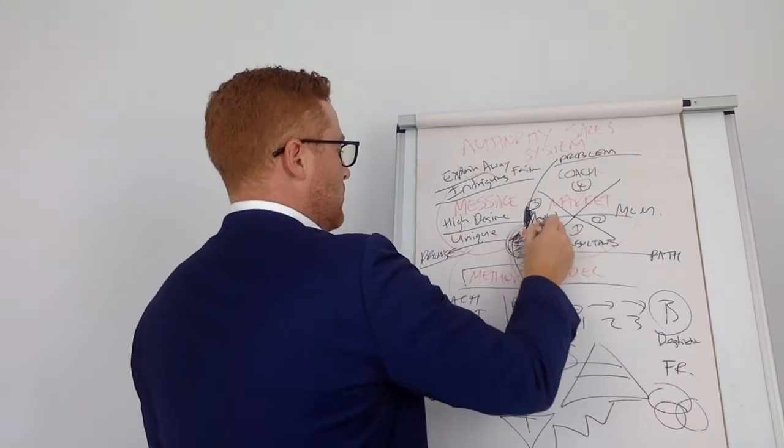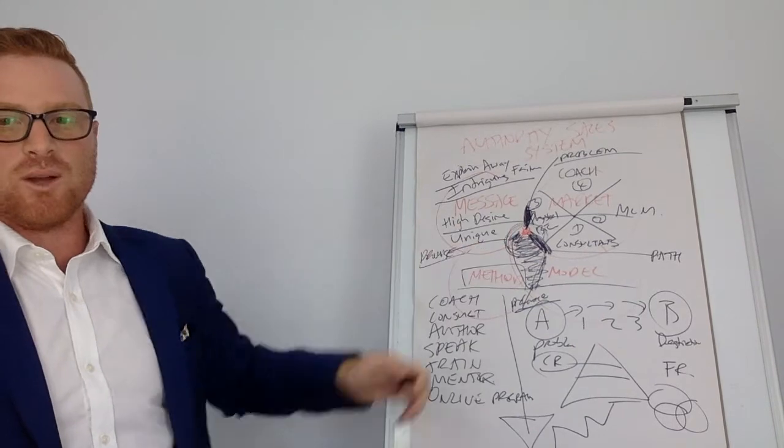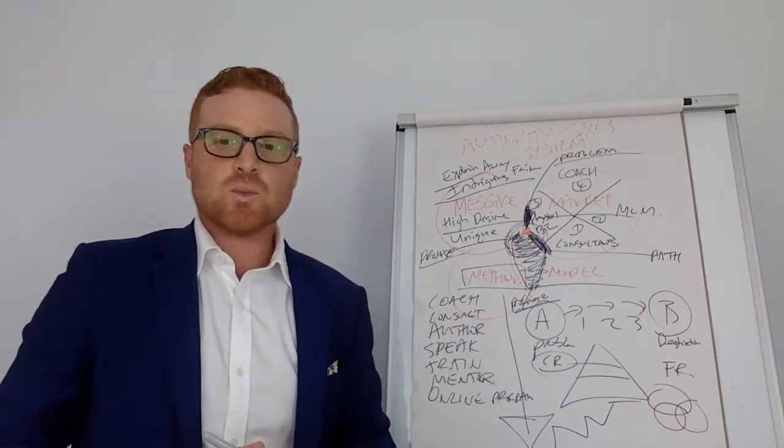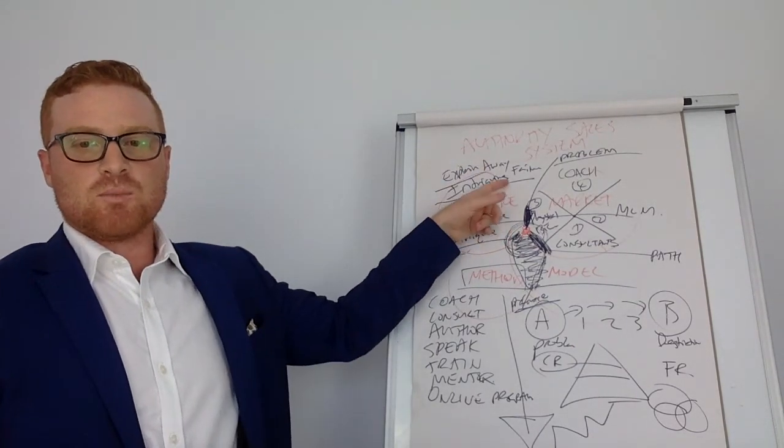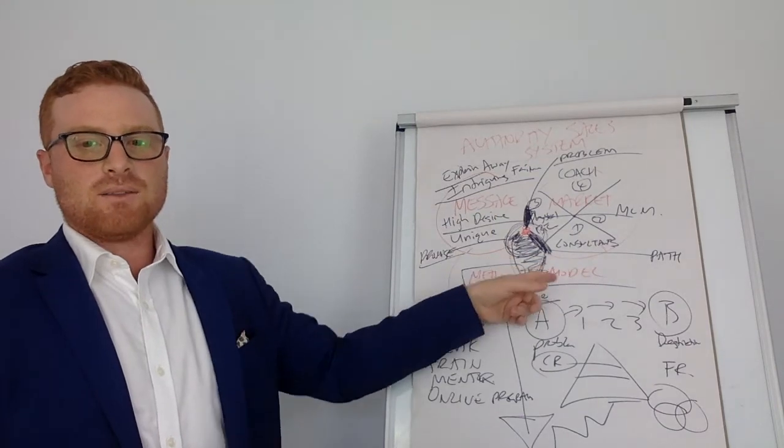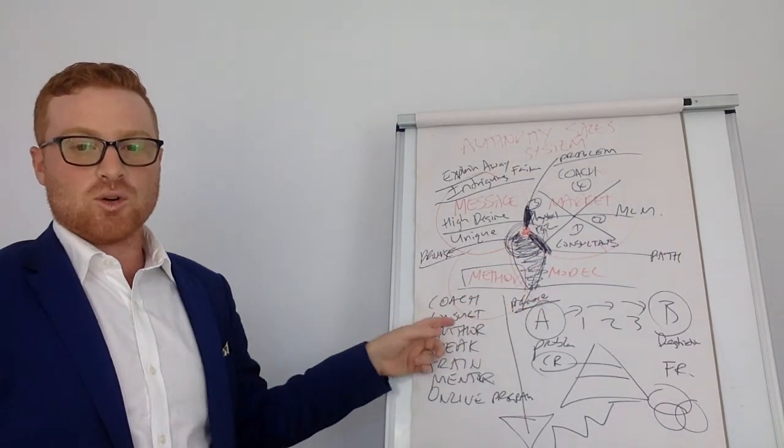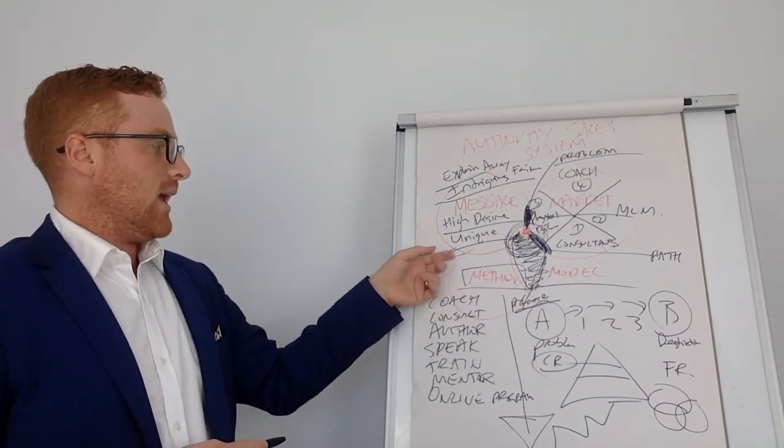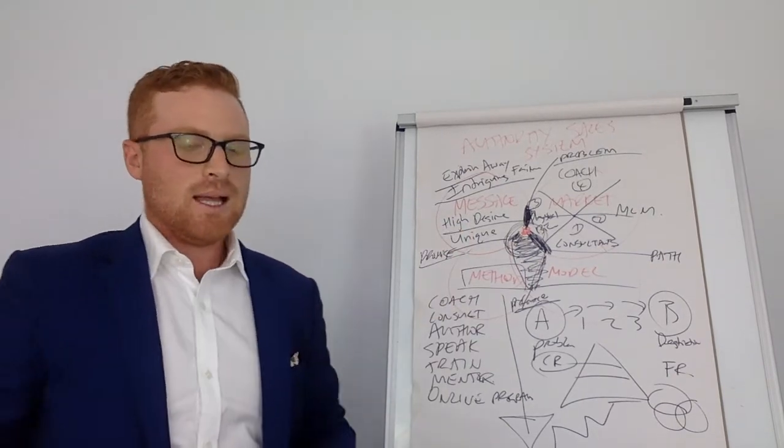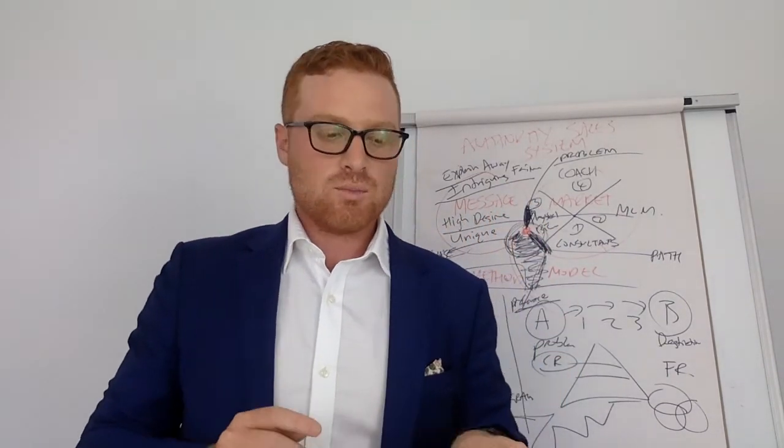And so when you get that, which if you have good drawing skills, it will be all of them. That is where a person knows the problem, they know their path, they prefer to have a coach or a consultant, they prefer it that way, and the promise is delivered through that. Now this is the authority sales model.